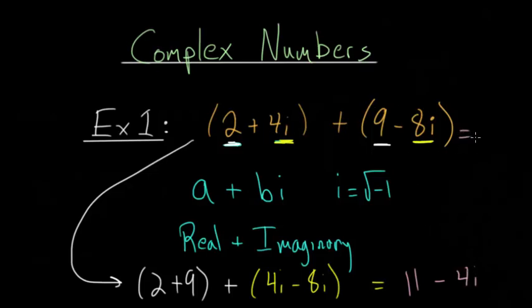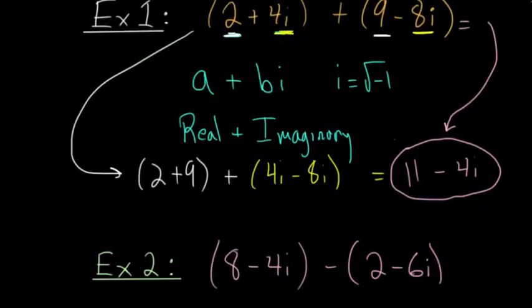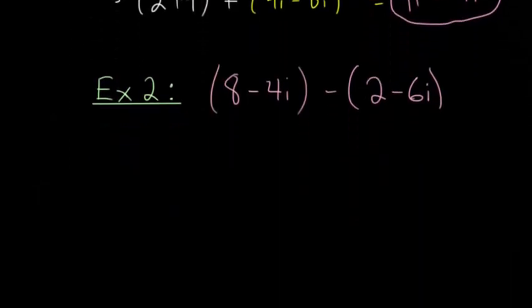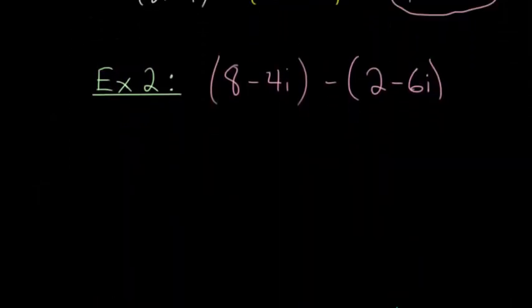So when we add these two complex numbers together, we get 11 minus 4i as the solution. And with that in mind, let's move on to a second example. And this one is specifically dealing with subtraction.